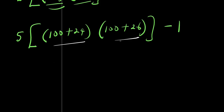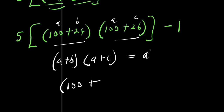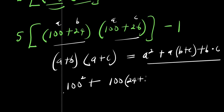So right now, 124 and 126 are in the form of a plus b times a plus c. This is our a, this is b, this is a, this is c. So this will simply give us 100 squared, that is a squared plus a times b plus c, plus b times c. So 100 squared plus 100 times 24 plus 26, plus 24 times 26.